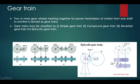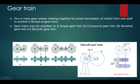A reverted gear train is a compound gear train in which the first and last gears rotate about the same axis. Power is transmitted from the first gear to the second, then to the third, and then to the fourth gear, with the axis of the first and fourth gear being the same. Such gear trains are used where speed reversing is required, with examples including the headstock of a lathe and clock mechanisms.